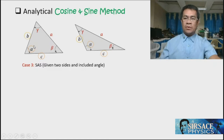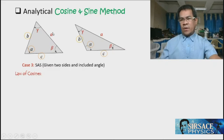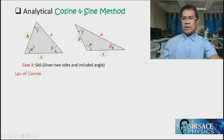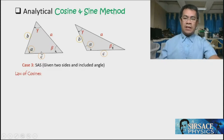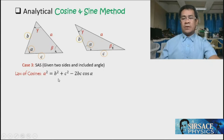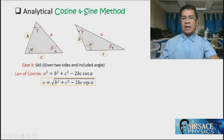This is Case 3 because we have two sides and one included angle. To solve for side a, we use the law of cosines: a squared equals b squared plus c squared minus 2bc cosine alpha, where alpha is the included angle between b and c. Taking the square root of both sides gives us the value of a by substituting the known values of b, c, and alpha.